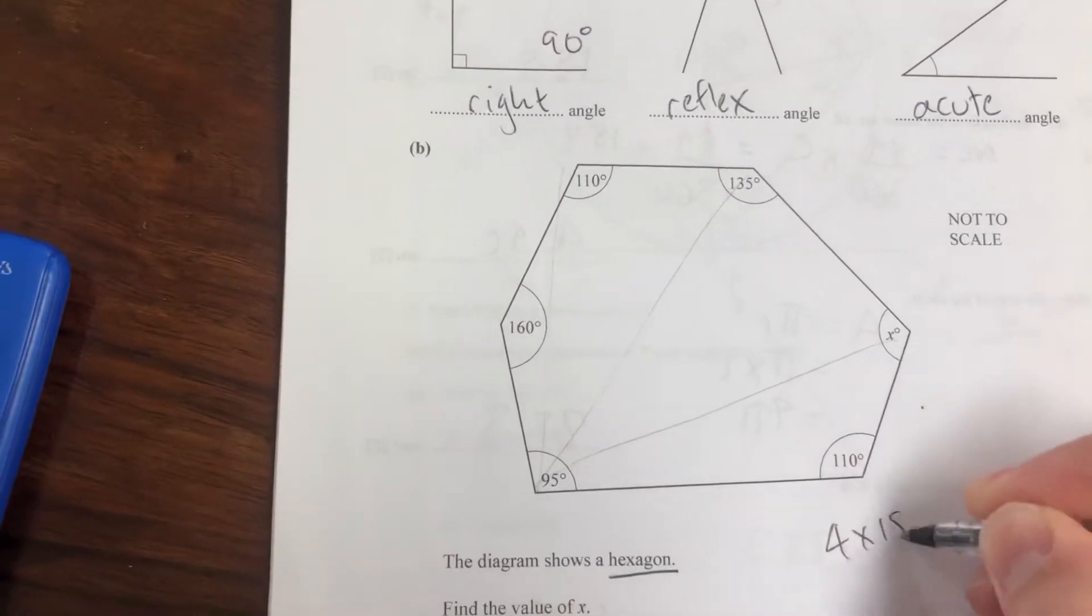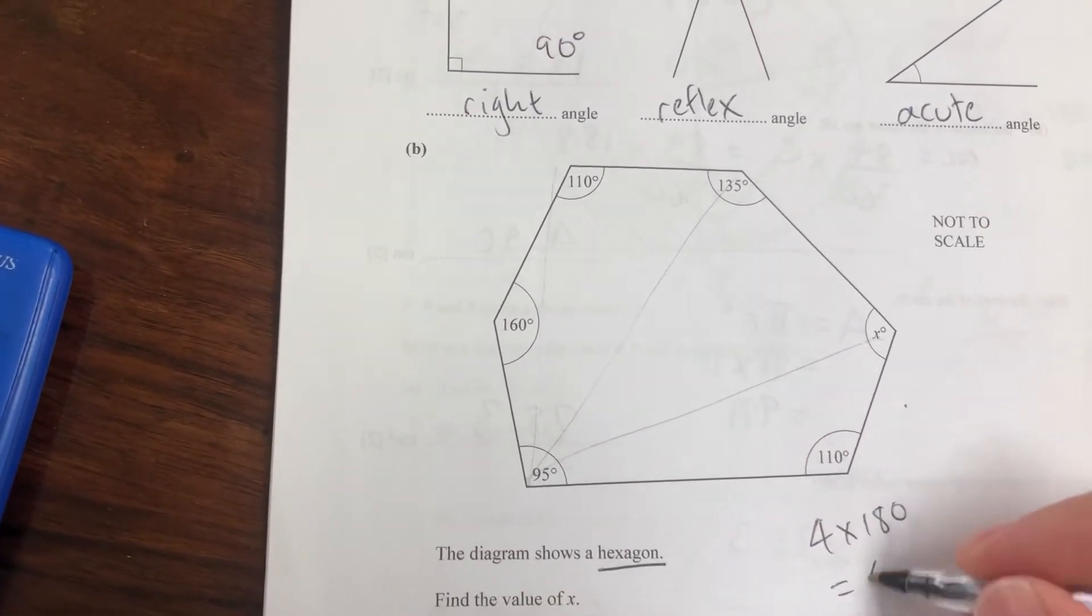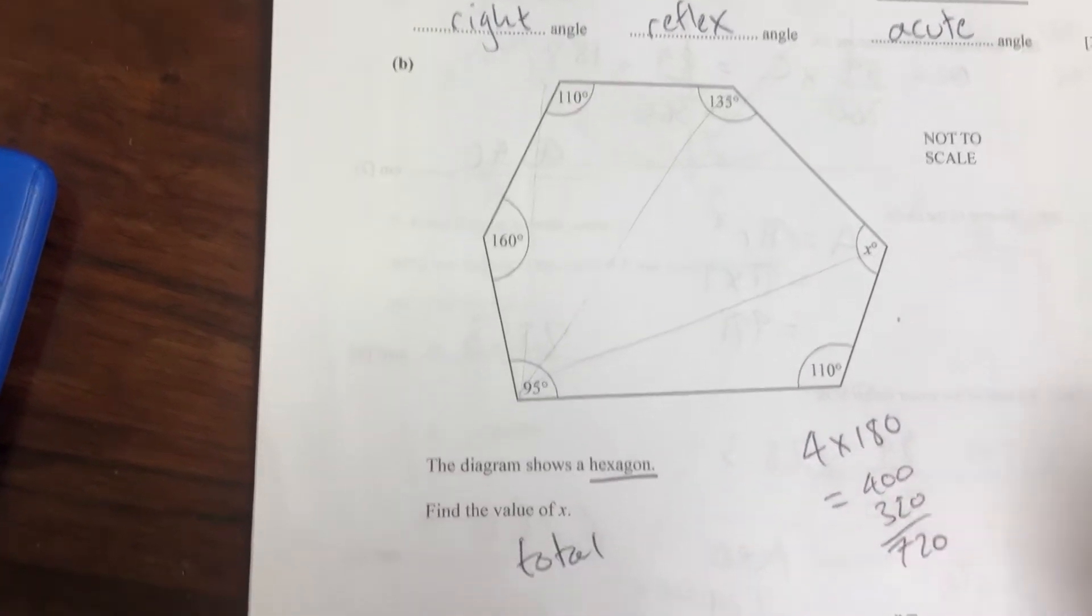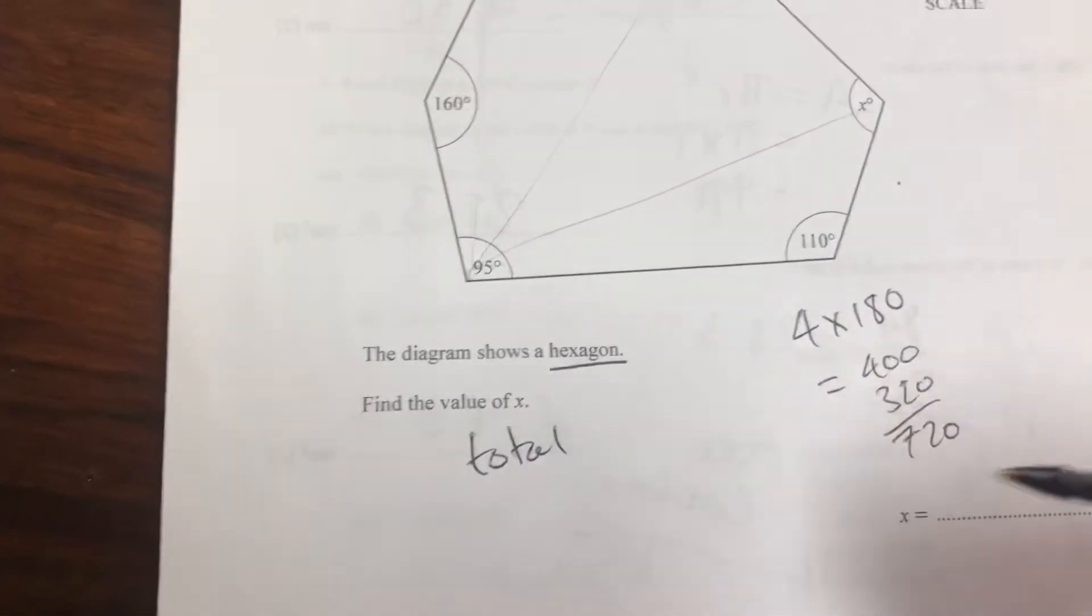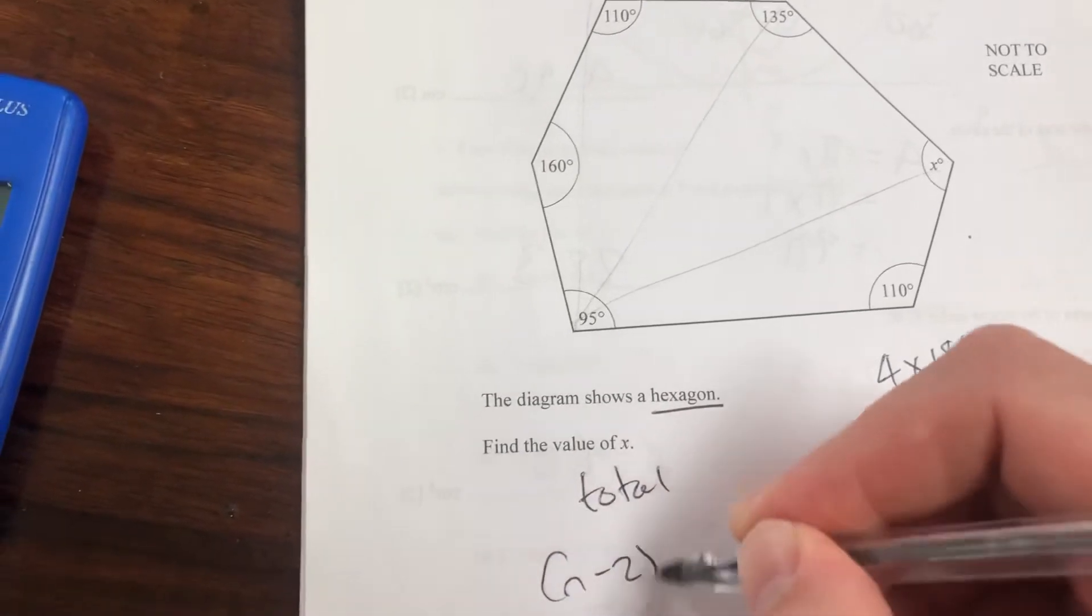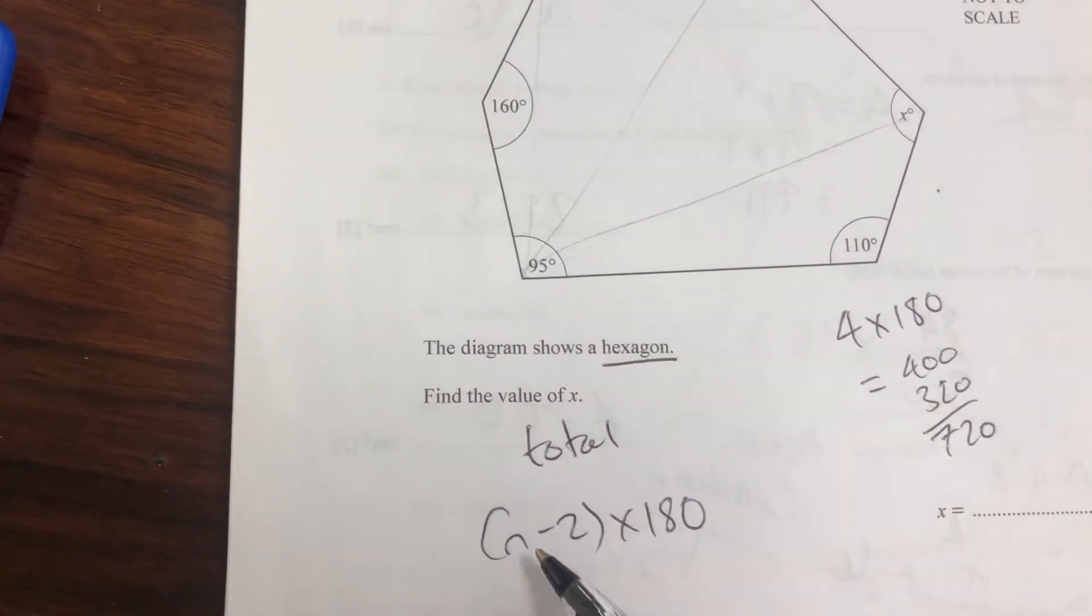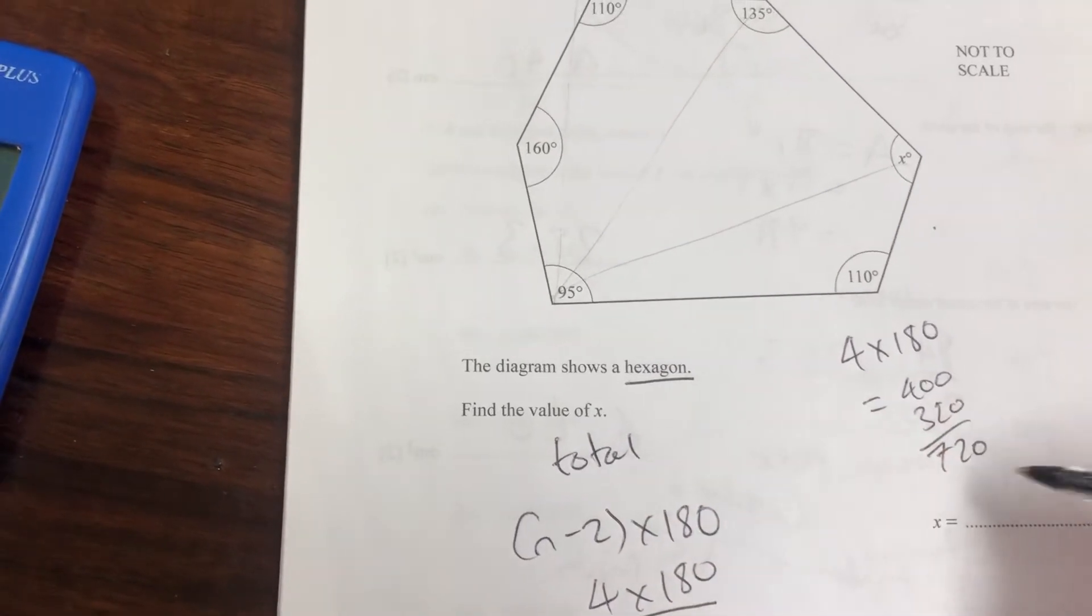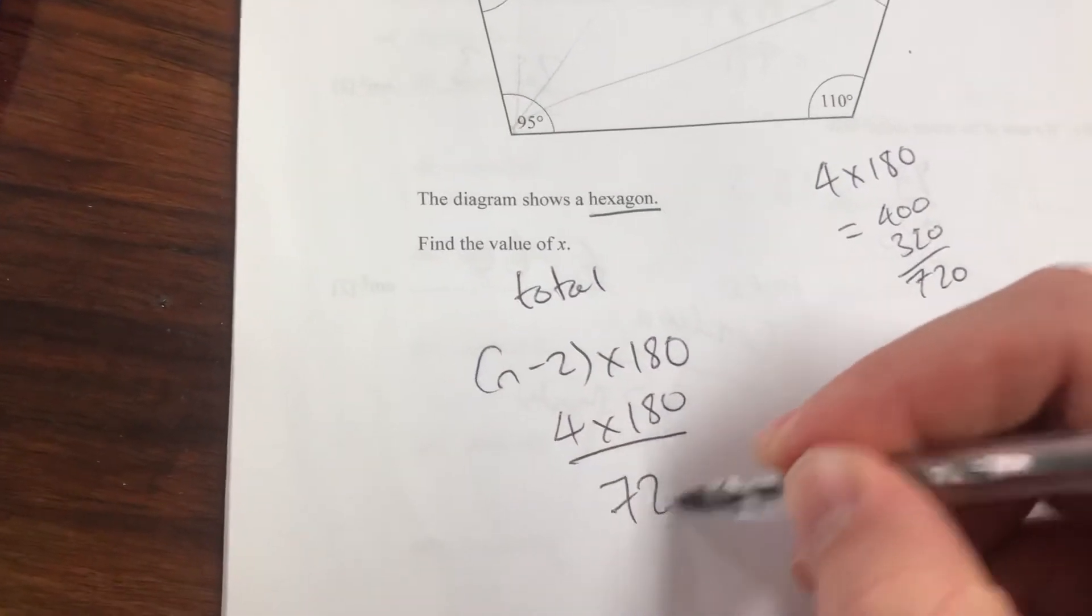So I know that four times 180 is 400 plus 320, it's going to be 720. And we get that by the formula n minus 2 times 180, where n is the number of sides. So it's 4 times 180 that we need, we need to add up to 720.